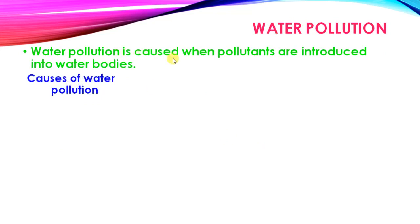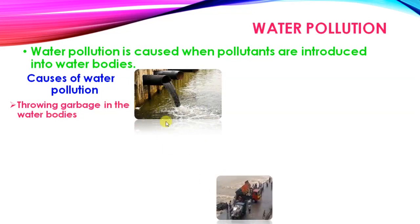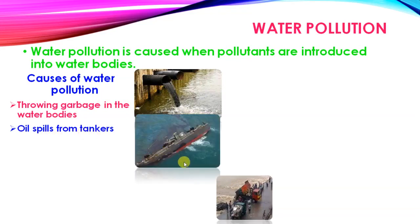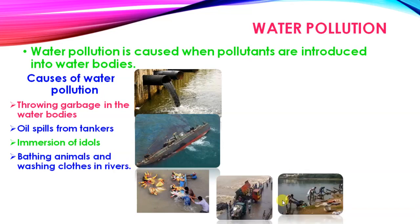Water pollution is caused when pollutants are introduced into water bodies. Causes of water pollution include throwing garbage into water bodies, oil spills from tankers mixing with water, and immersion of idols in water bodies. Bathing animals and washing clothes in rivers also causes water pollution.